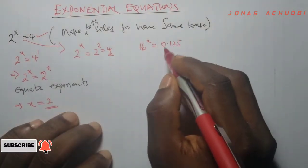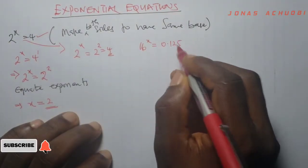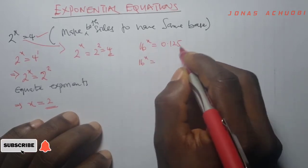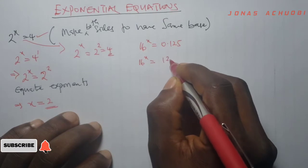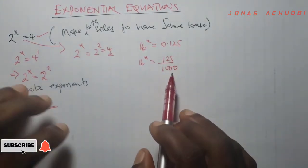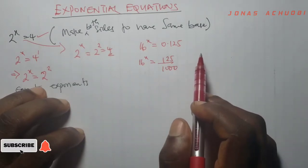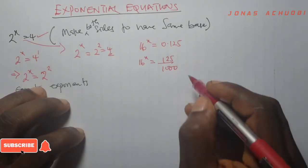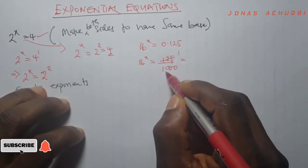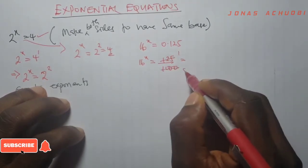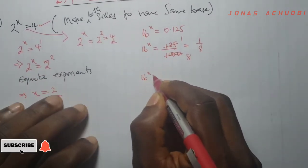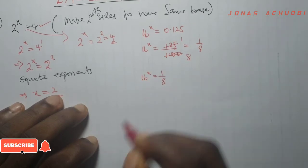We have a decimal here. The first thing we want to do is to convert this to a fraction. So 16 raised to the power x is equal to 0.125, which simply means 125 divided by 1000. Because if you divide 125 by 1000, you get 0.125. And you can also simplify further, because 125 can go into 1000 eight times. So that is 1 over 8. So we have 16 raised to the power x equal to 1 over 8.